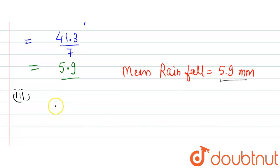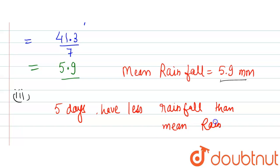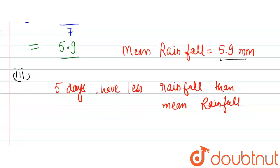So we can say five days have less rainfall than mean rainfall. So this is the answer to the third part and we have solved the question. Thank you.